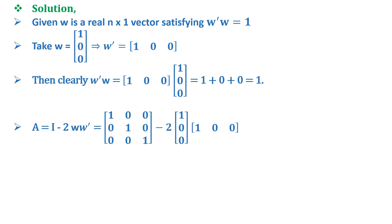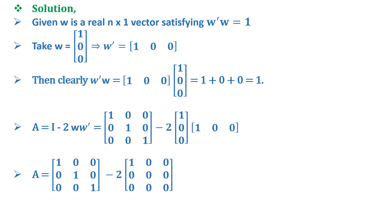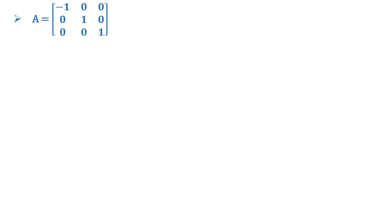We compute A = I - 2ww'. The product ww' gives the 3×3 matrix with 1 in the (1,1) position and zeros elsewhere. So A = I - 2×[[1,0,0],[0,0,0],[0,0,0]], which gives A = [[-1,0,0],[0,1,0],[0,0,1]], a 3×3 matrix.